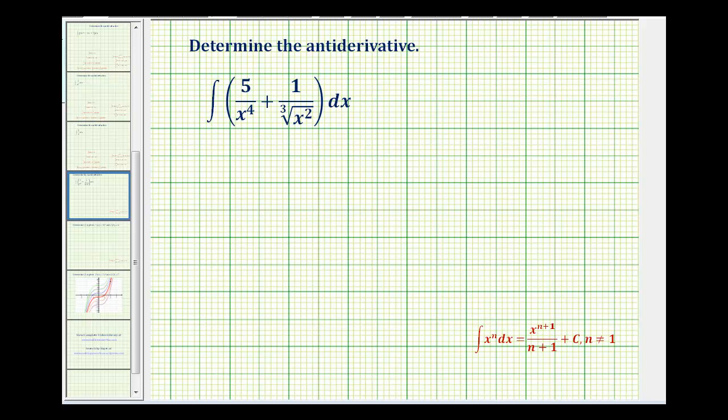We want to determine the antiderivative of five divided by x to the fourth plus one divided by the cube root of x squared with respect to x. Which means we want to find a function or a family of functions that have a derivative of this integrand here.